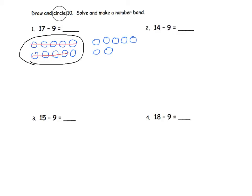I can see that I have 1 left in the circle, plus 7 outside of the circle. 1 plus 7 equals 8. To solve, 17 minus 9 equals 8.